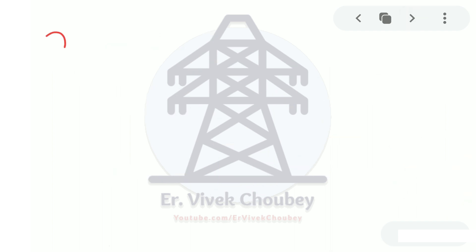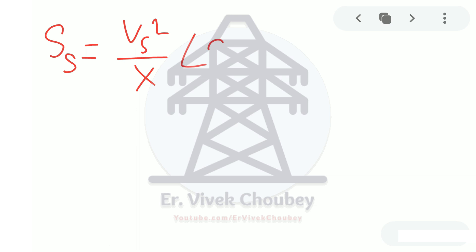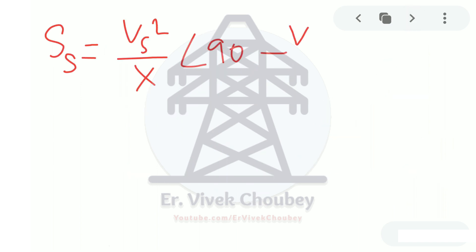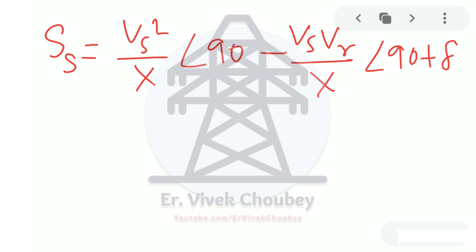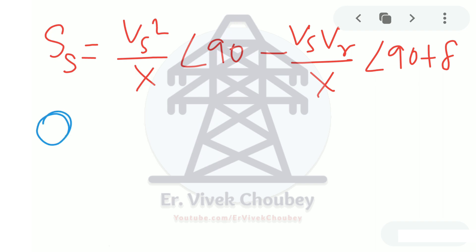Multiplying these two factors, Ss equals Vs²/X at angle 90°, minus Vs·Vr/X at angle (90 + δ). From this expression for Ss, we are interested in finding the reactive power Qs sent from the sending end side.